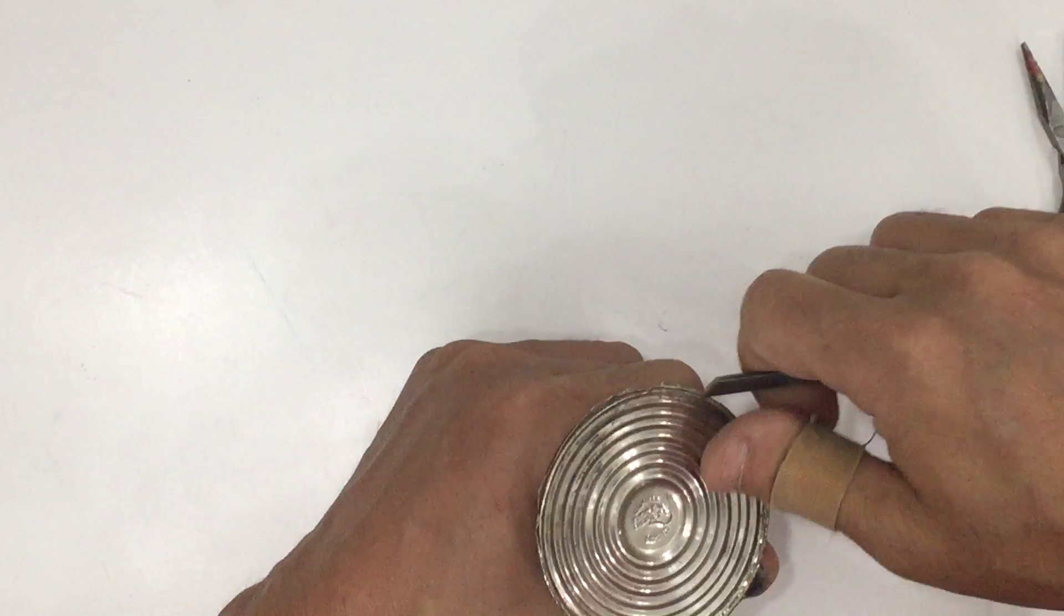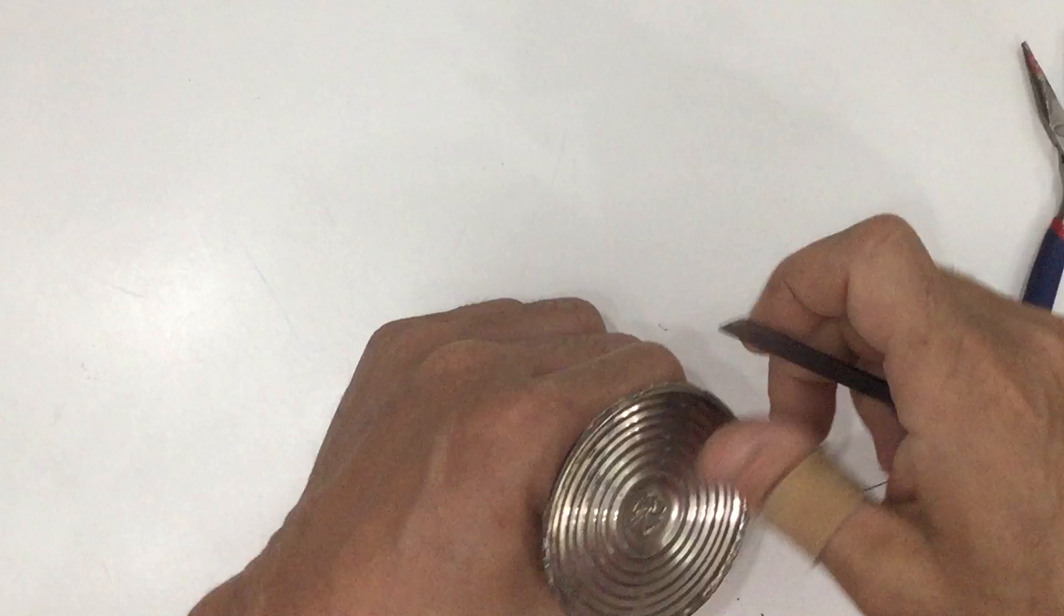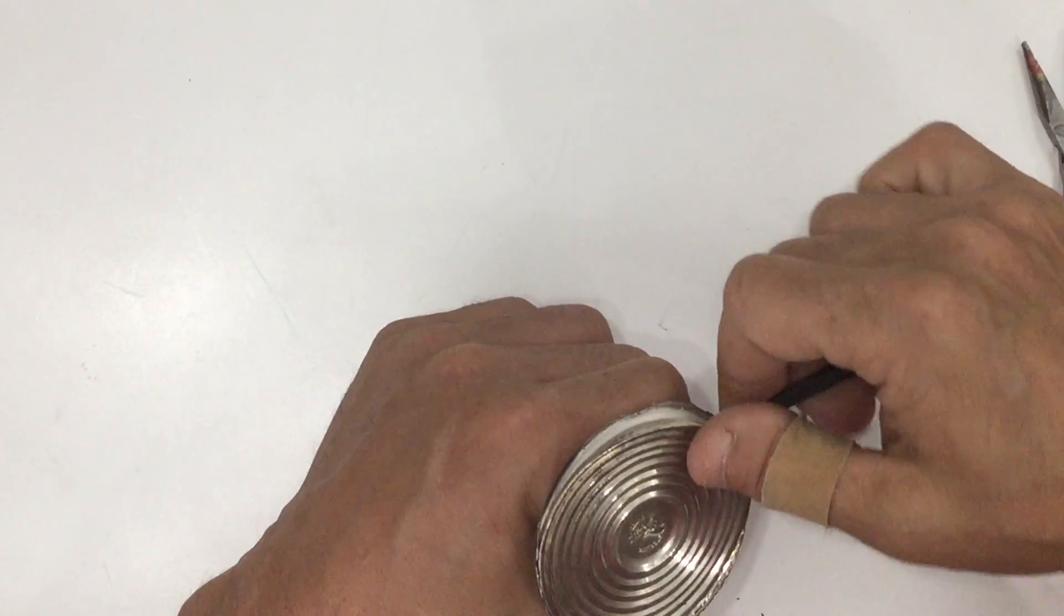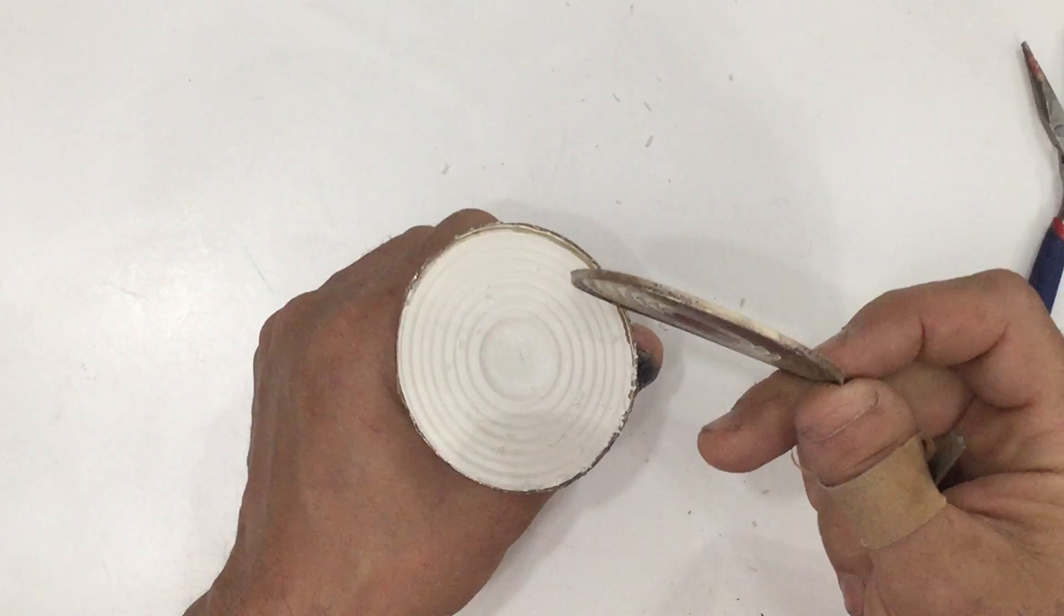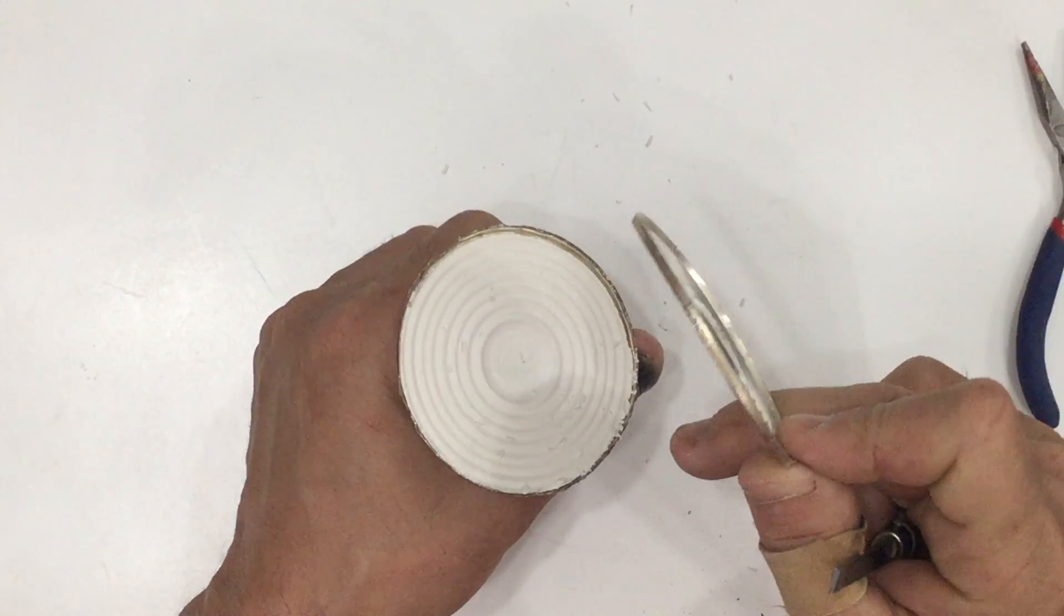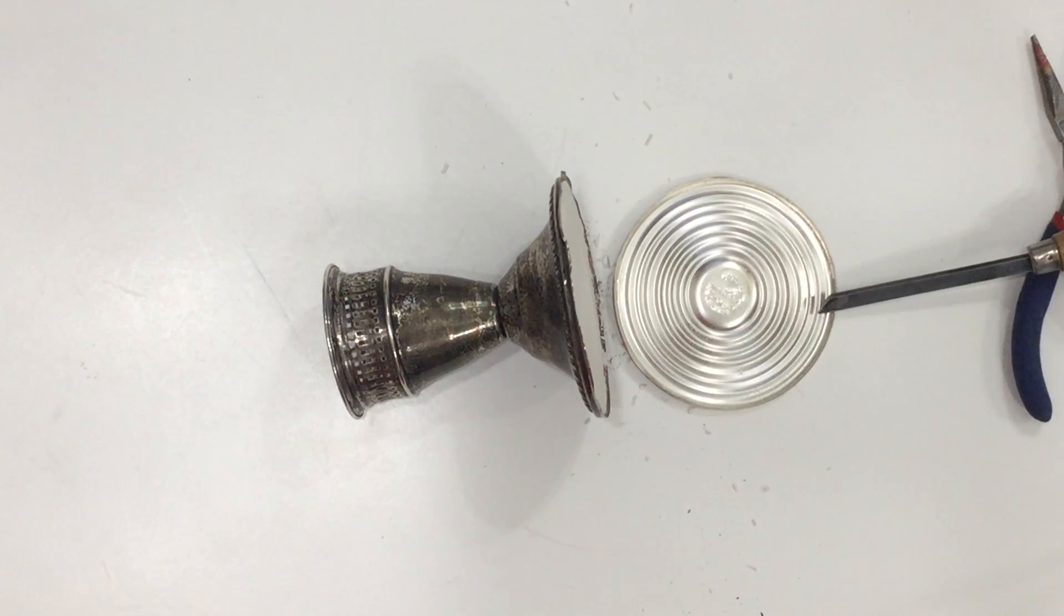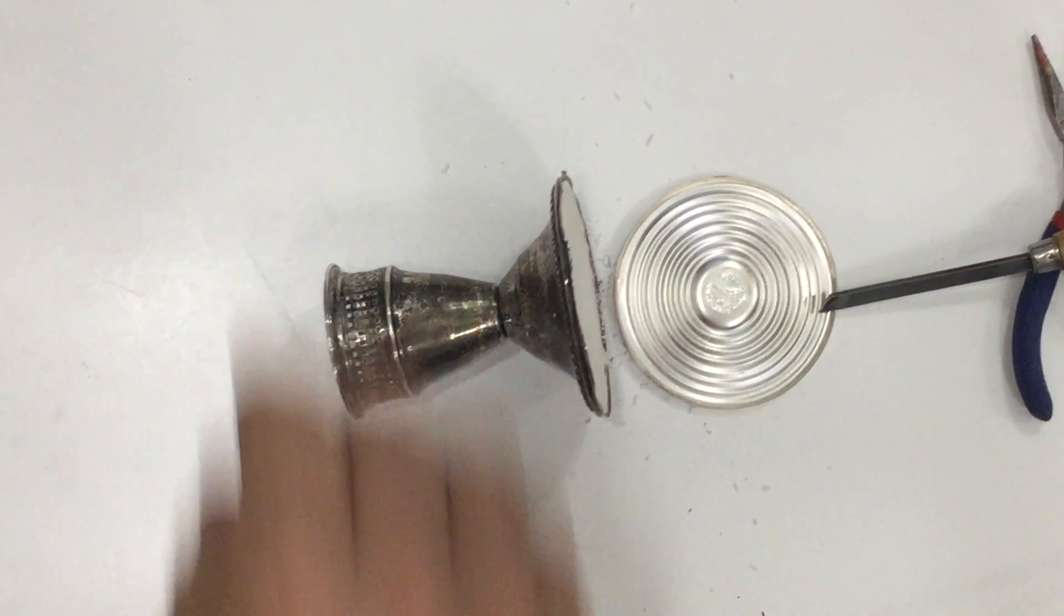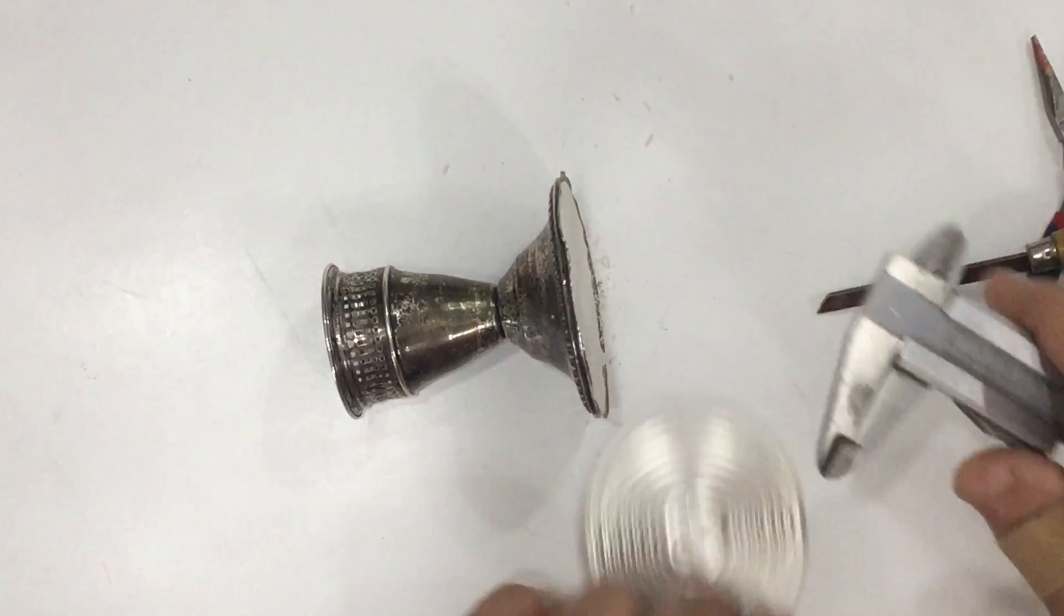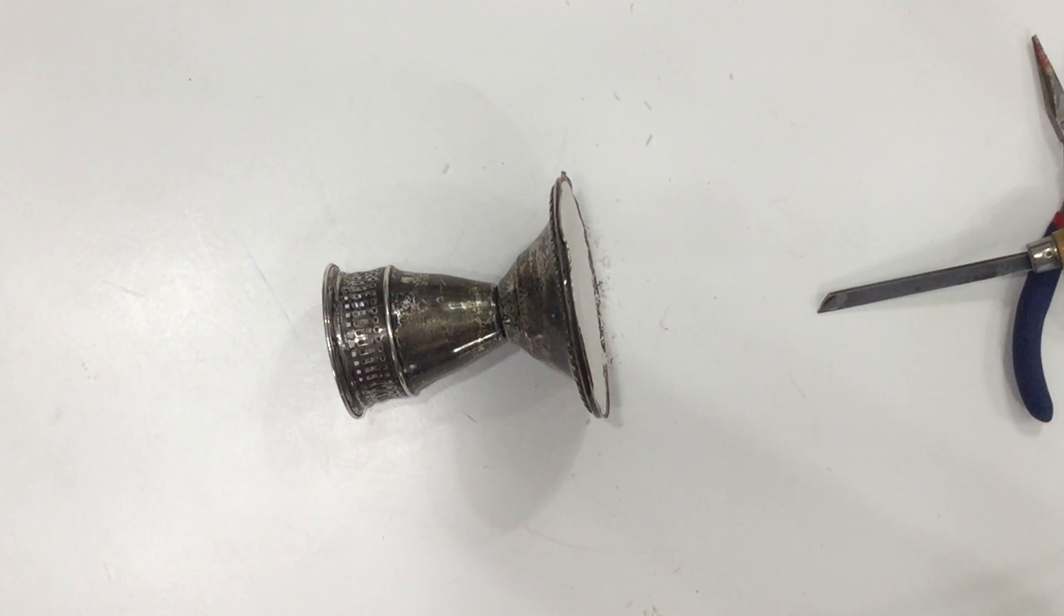So then you can pop this bottom off. The reason they put all these ridges on the bottom and they form everything is because it's so thin. It's gotta be quarter millimeters maybe less.